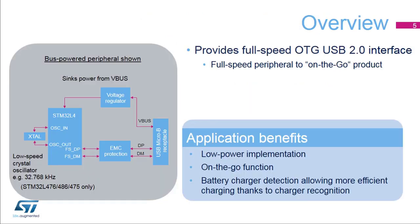This figure shows the simplest connections between an STM32L4 microcontroller and a USB connector in a peripheral configuration. The STM32L4 features a full-speed USB communication interface allowing the microcontroller to communicate typically with a PC or a USB storage device. The simplest implementation is a USB peripheral device, but the STM32L4 also supports on-the-go USB functions.